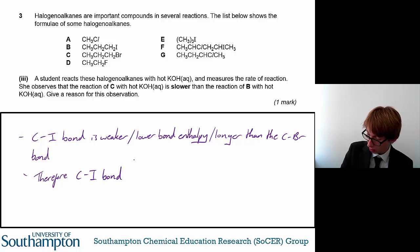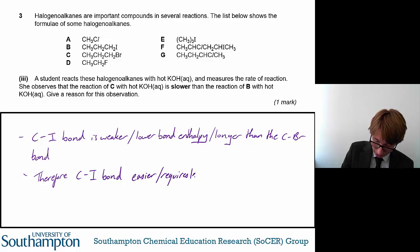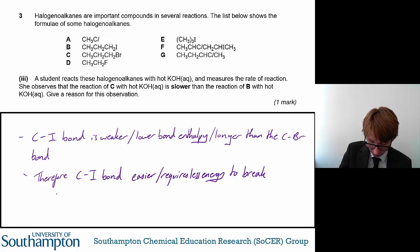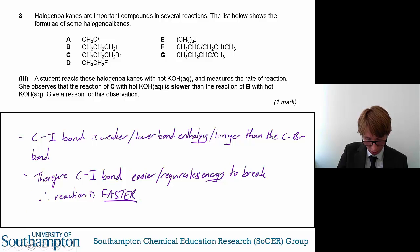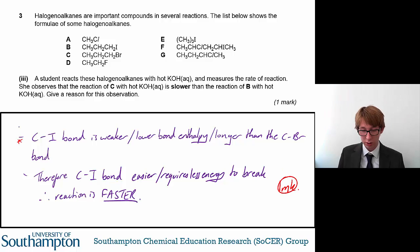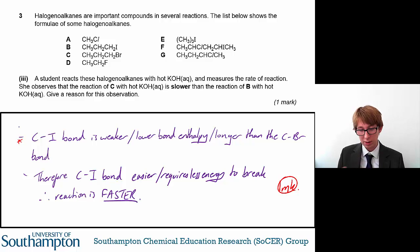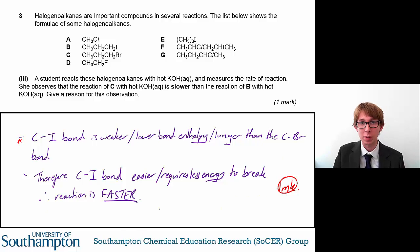The C-I bond is easier to break, or it requires less energy to break, and therefore the reaction is faster. To get the mark for this question, you need to say both points: that the carbon-iodide bond is weaker, longer, or has a lower bond enthalpy than the carbon-bromide bond, and also that therefore the carbon-iodide bond is easier to break or requires less energy to break. You get one mark for saying all of that. So that's question three — a pretty long one, but once you get the hang of it, it seems pretty simple.